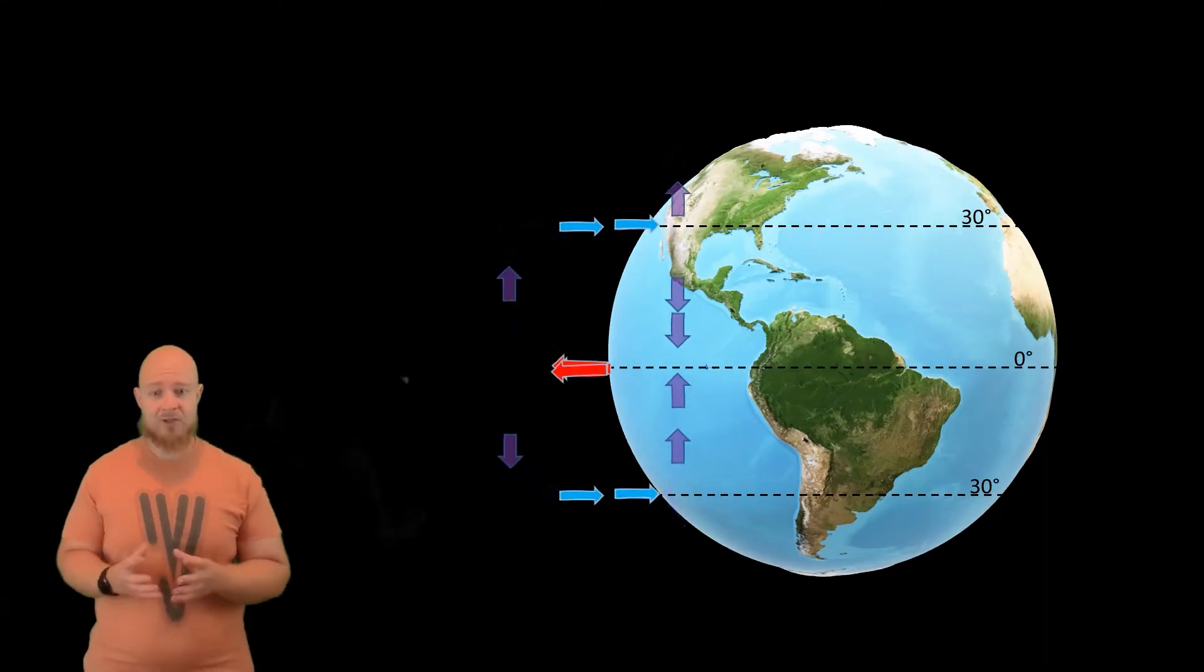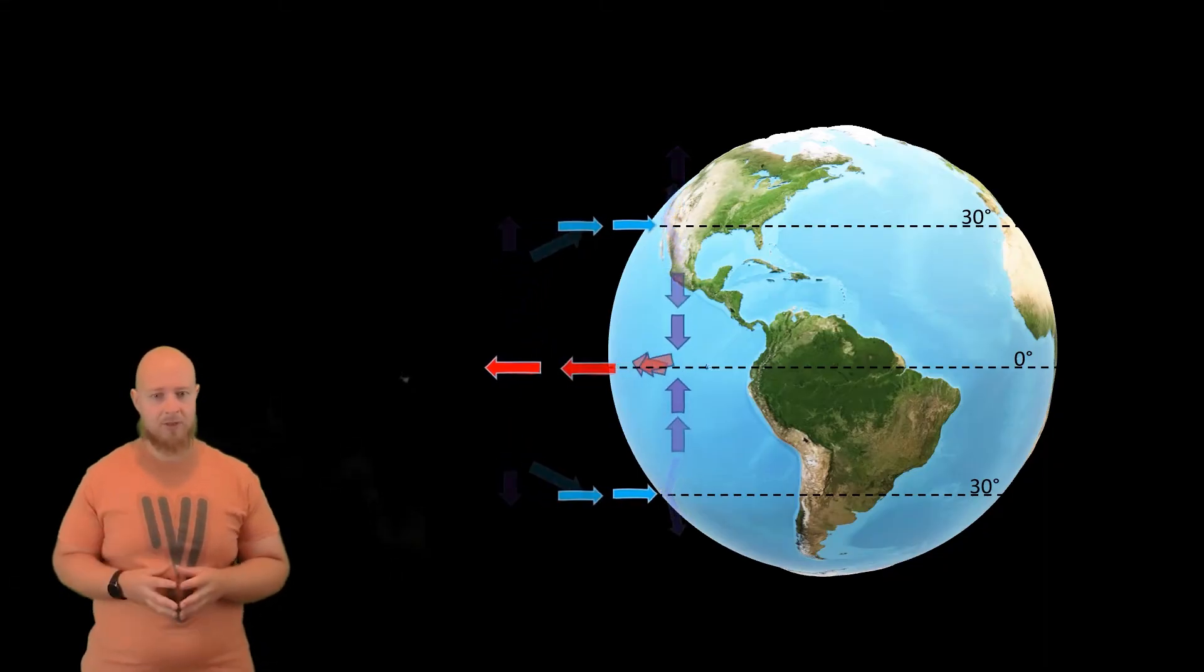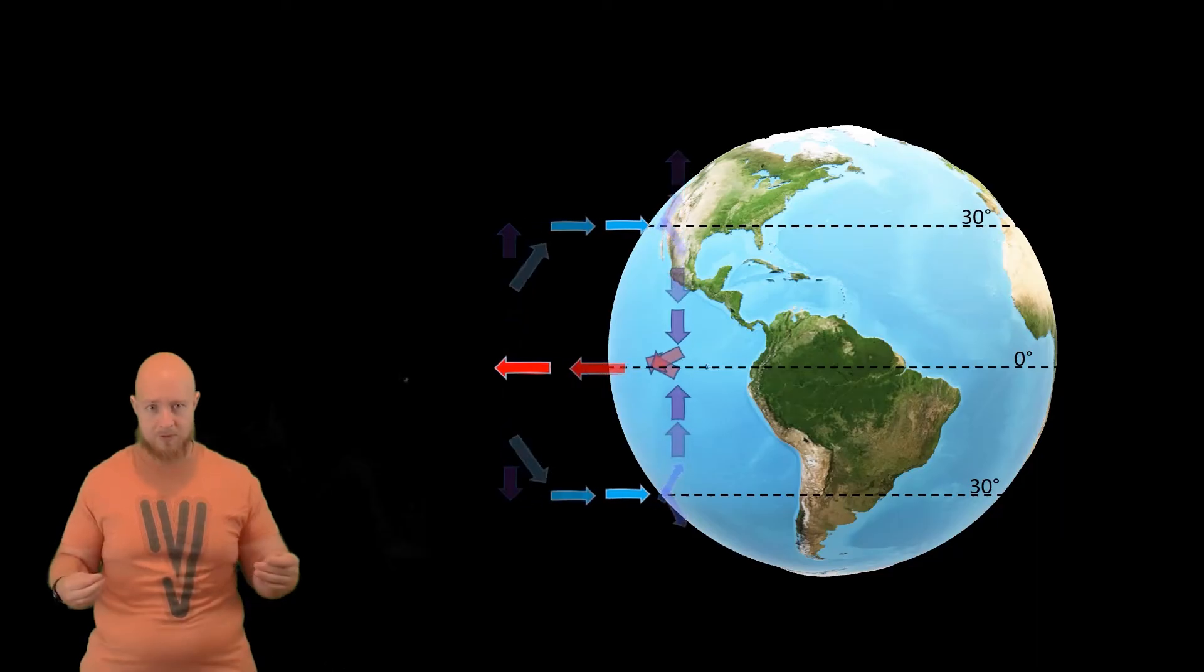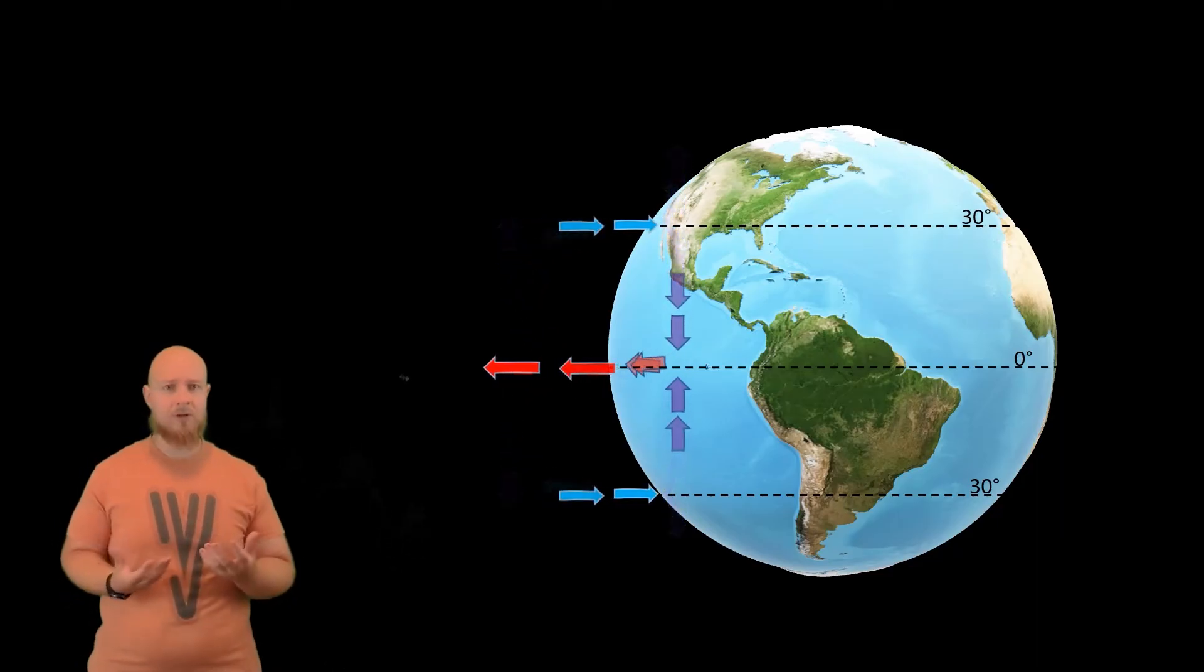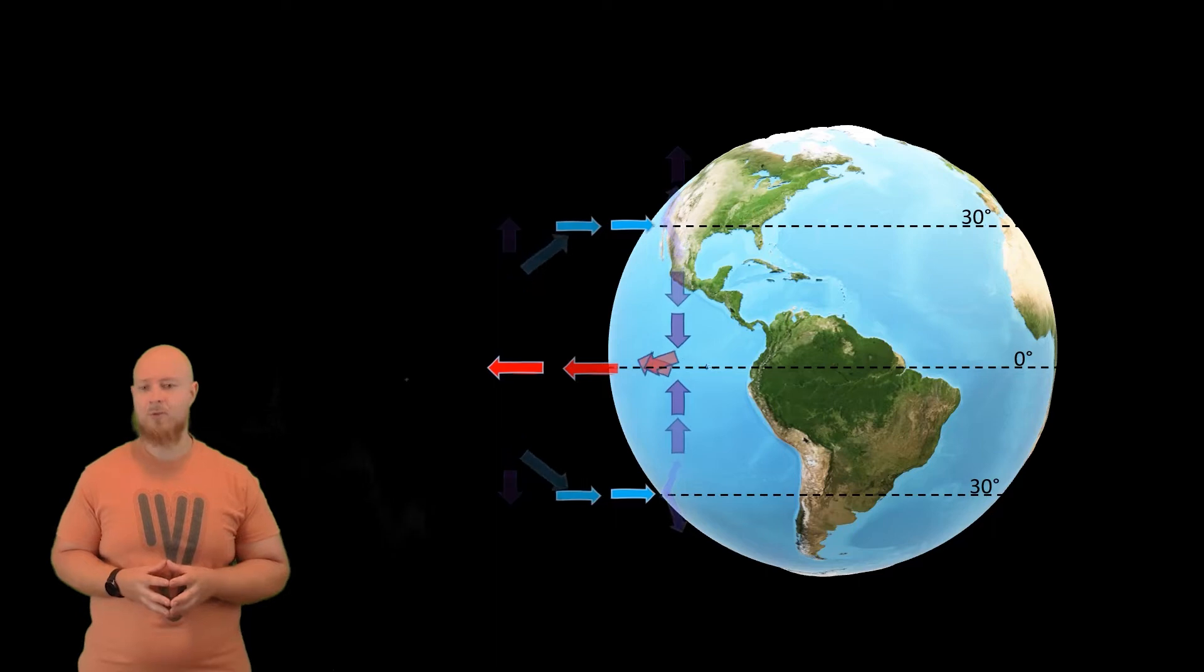Due to high insulation, air rises at the equator, which pulls air from the surface towards the equator. The air rides along the troposphere until it falls at the 30 degree line.